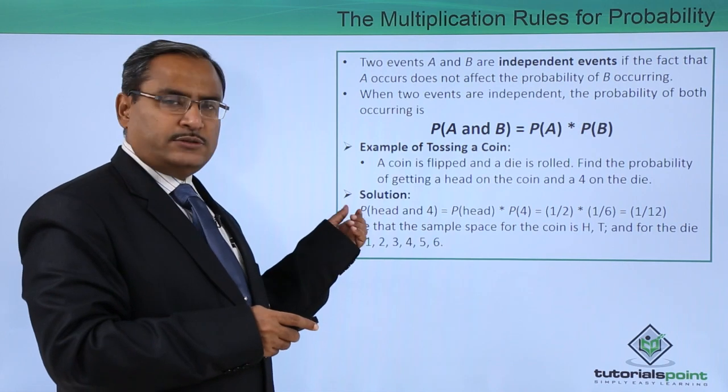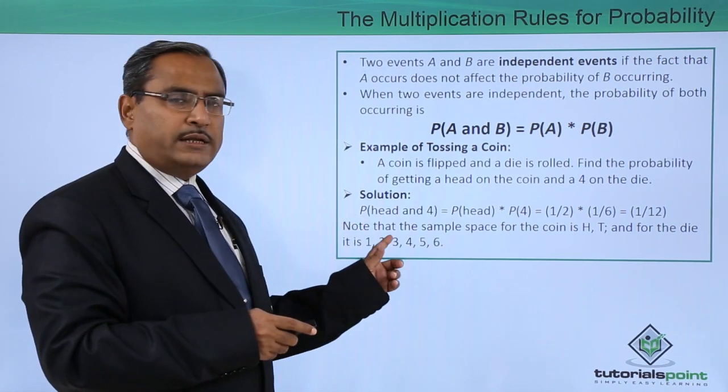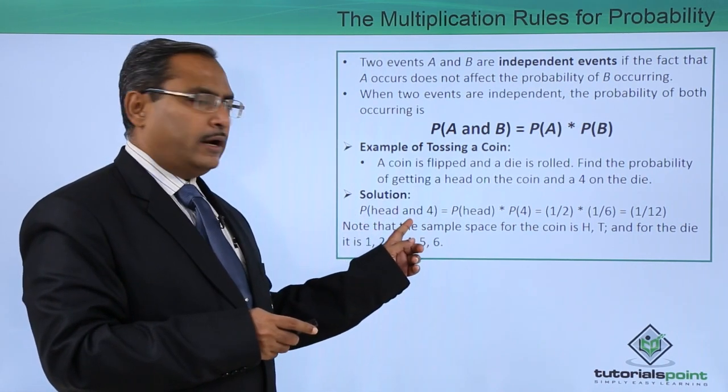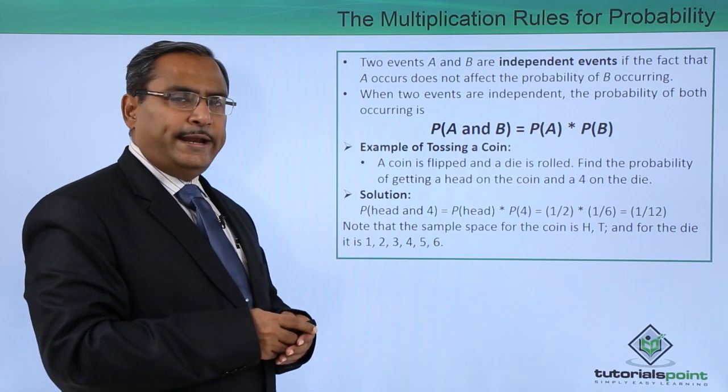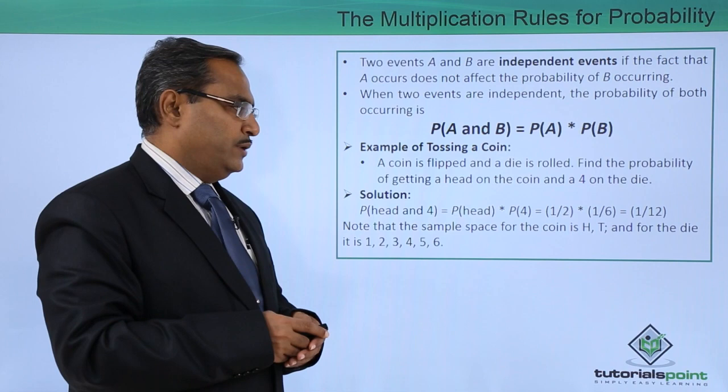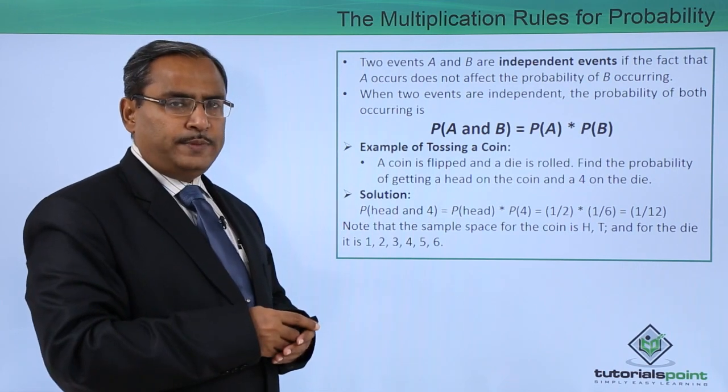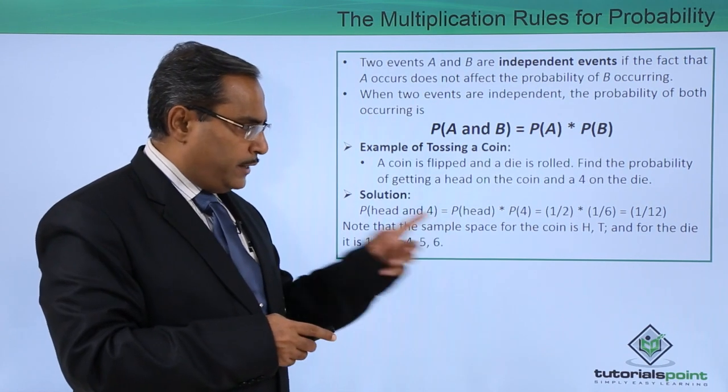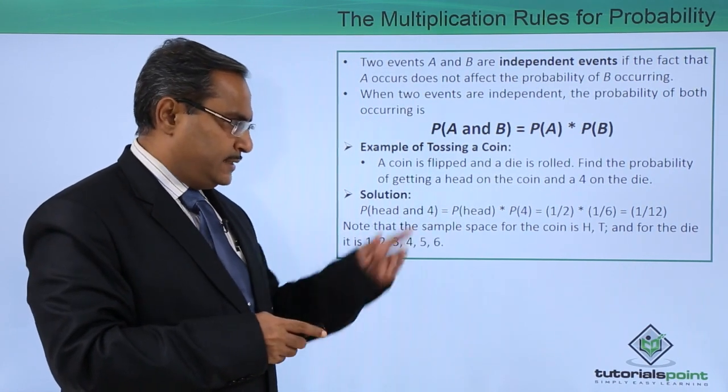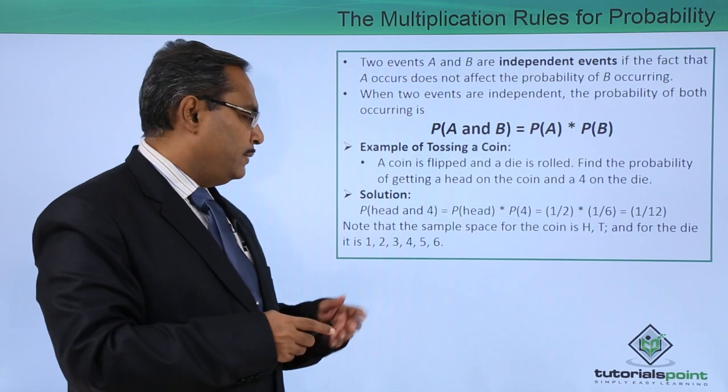In that case, we have this solution: probability of head and 4 can be written as probability of head times probability of 4. This equals 1/2, because in coin tossing we have two outcomes, head and tail, times 1/6, which equals 1/12.